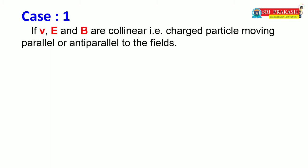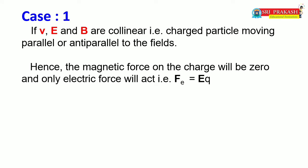Case 1: If velocity, electric field, and magnetic field are collinear — that is, the charged particle is moving parallel or anti-parallel to the fields. Here collinear means all are in the same line and same plane, so the angle between them is 0. Therefore, the magnetic force on the charge will be zero and only the electric force will act, that is FE = EQ. The reason is that the angle between the velocity vector and magnetic field vector is zero, so the force due to magnetic field will be zero.